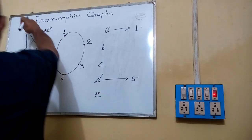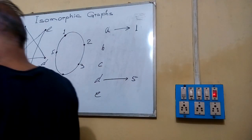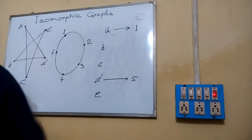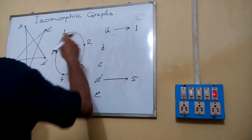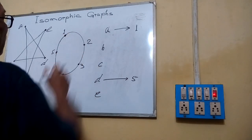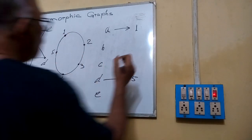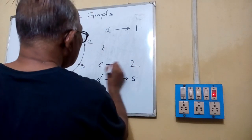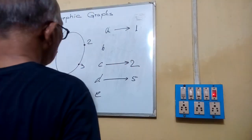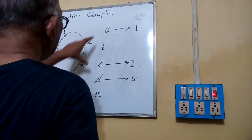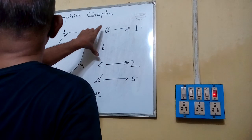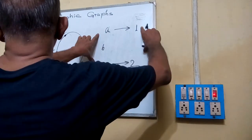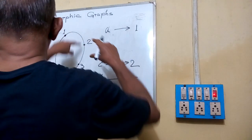From A, another edge is going to C, and here from 1, another edge is going to 2. So if we are associating C with 2, then edge AC is present here, and edge 1-2 is also present there.